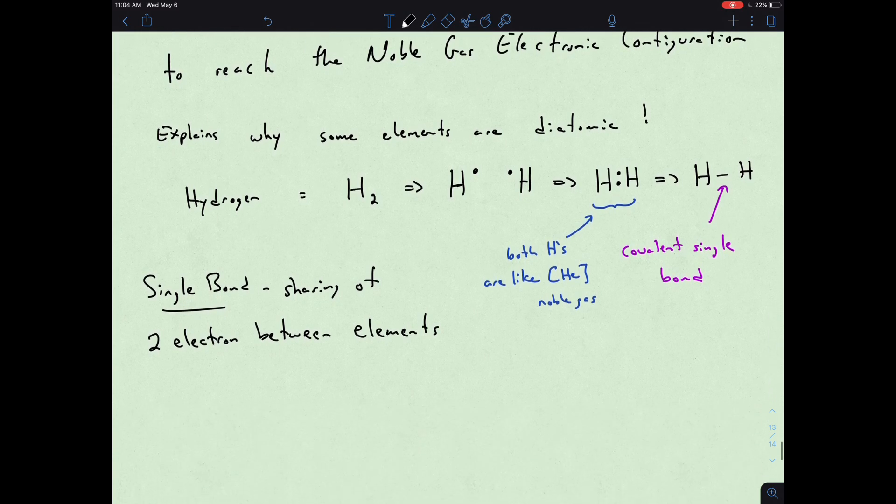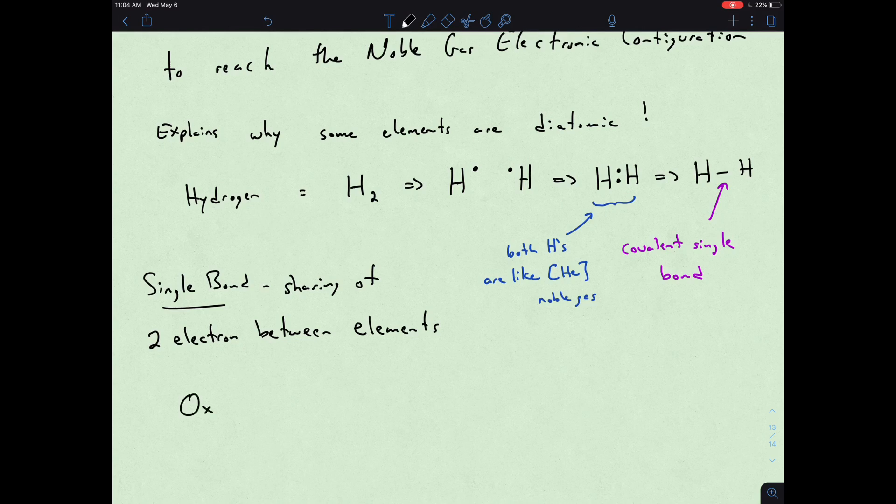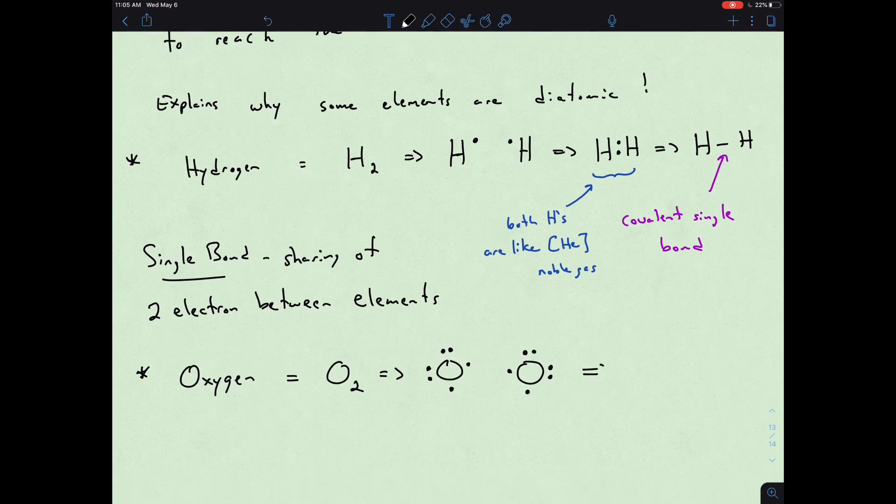We can go a little bit further in terms of maybe looking at oxygen. Oxygen is O2, also a diatomic. If we look at oxygen's octet or valence electrons, it has six. So we could represent one oxygen like this and one oxygen like this, and so they can actually share those electrons in terms of the unpaired.